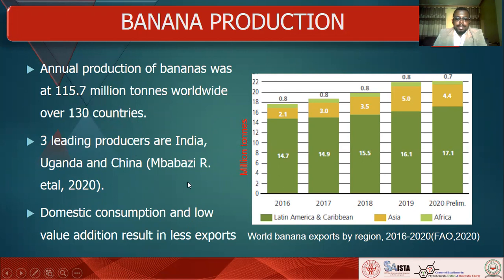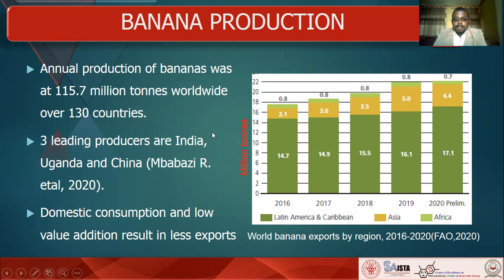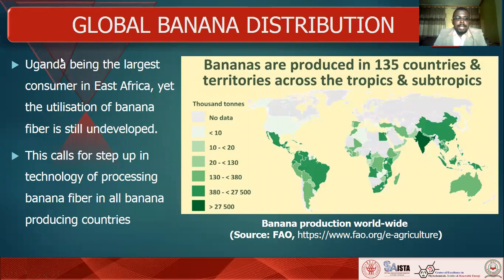India, Uganda, and China are the largest producers. India and China lie in Asia, and Uganda is in Africa, but these three countries have low exports, meaning there is domestic consumption and low value addition, which results in less exports. There may also be other factors concerning global production.